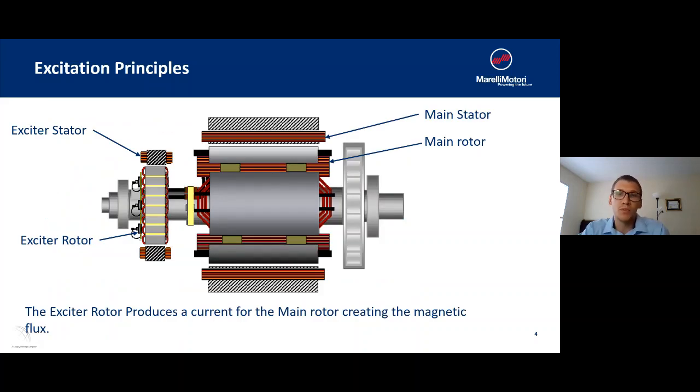So excitation principles. The main principles of the excitation system are going to be the main stator, the main rotor, exciter stator, and the exciter rotor. We're going to cover how the exciter rotor provides power to the main rotor, which is what creates the magnetic field that produces the power for the alternator.